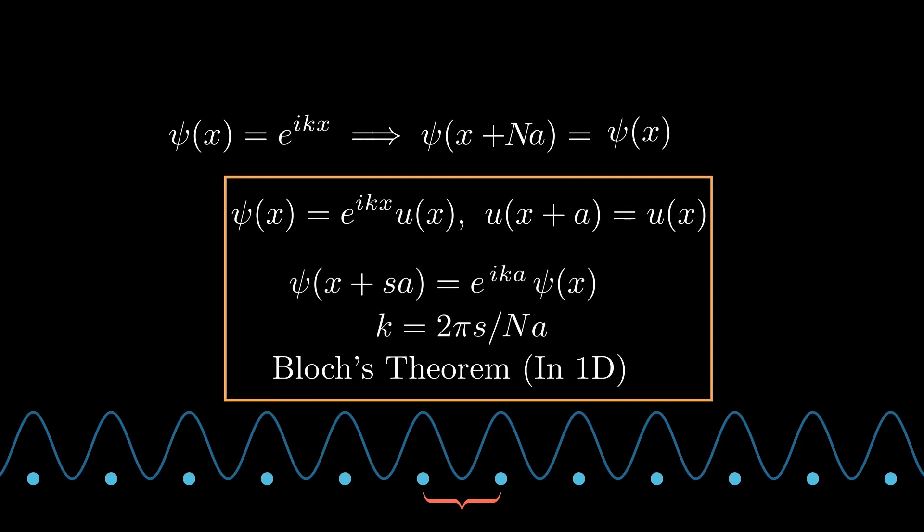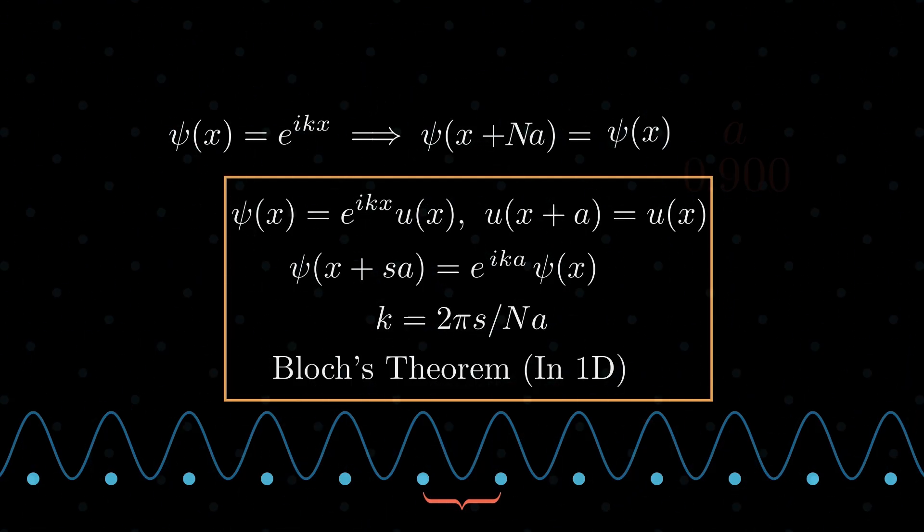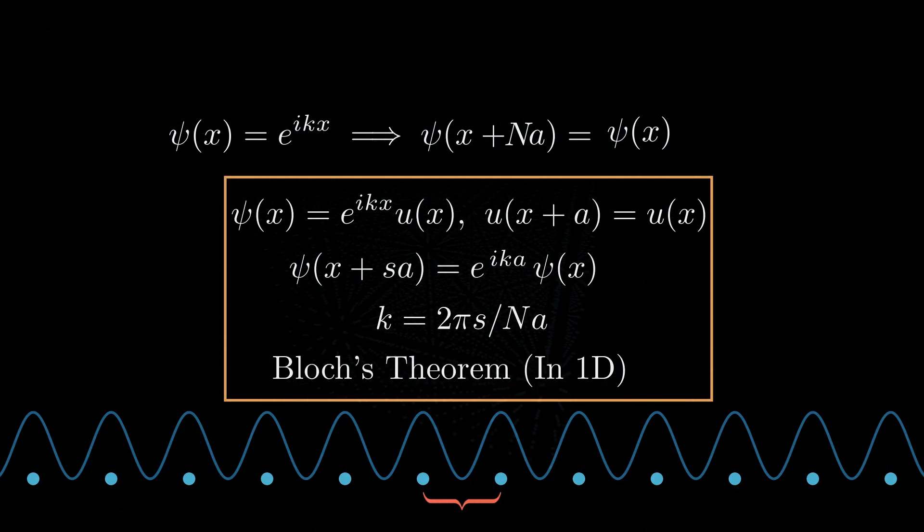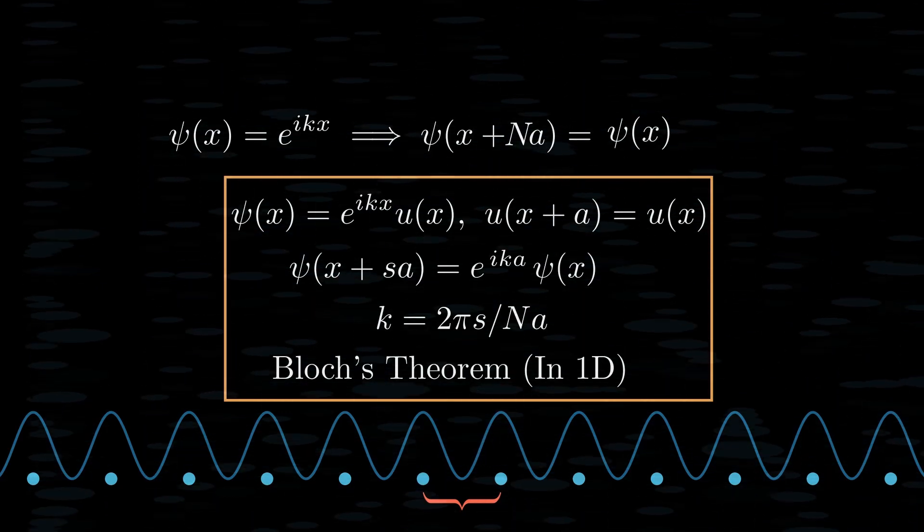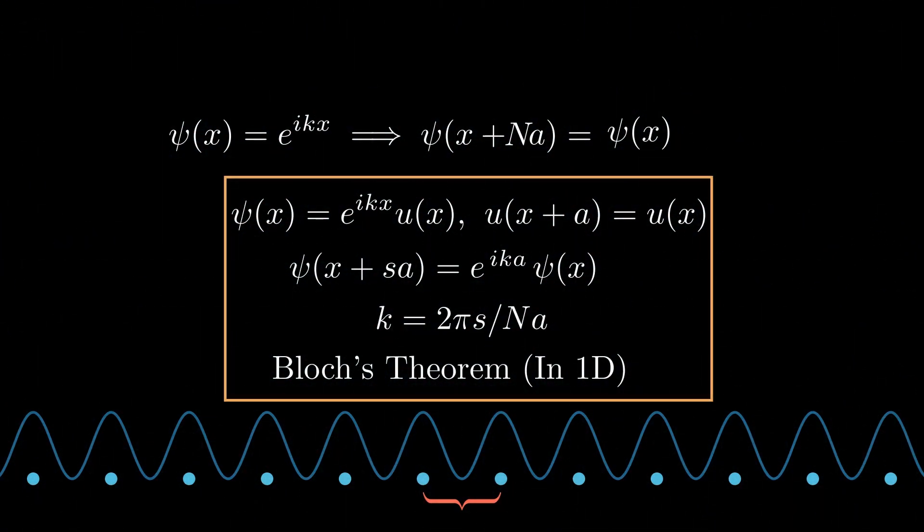Alright, this is the full Bloch's theorem then. It tells us that our wave function, our electron wave function, can be written as the complex exponential function times some periodic function u of x. And because of that, whenever we translate an integer multiple of a, the lattice constant, our wave function differs by a phase factor, which happens to be an n-th root of unity.